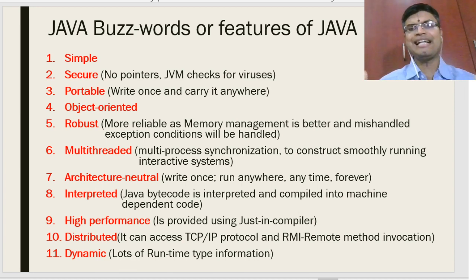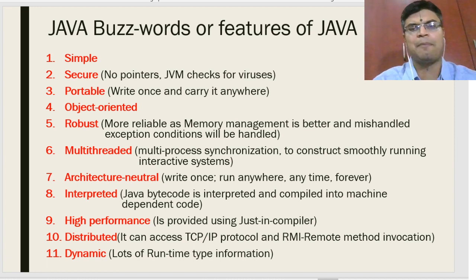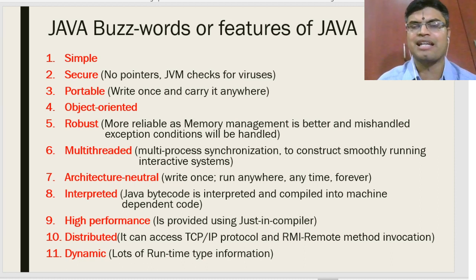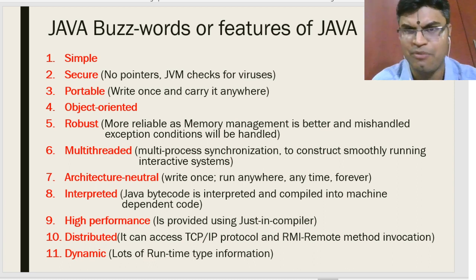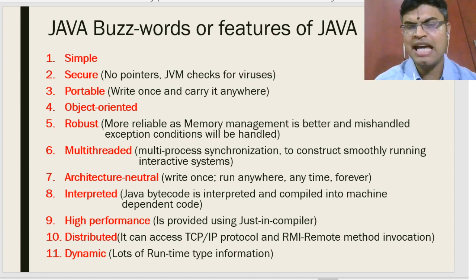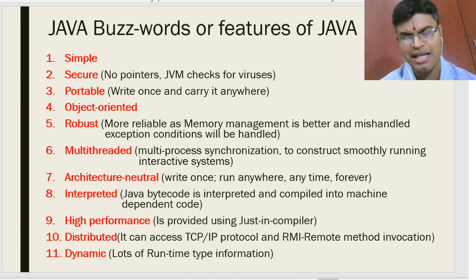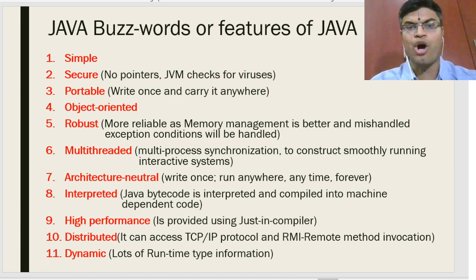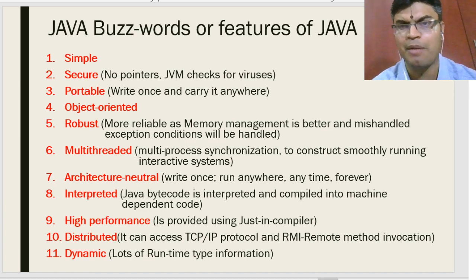You can create distributed applications in Java, including TCP/IP applications and RMI applications. RMI stands for Remote Method Invocation, and TCP/IP stands for Transmission Control Protocol/Internet Protocol. These distributed applications can be written directly using Java, which is very powerful. Finally, Java is dynamic — it records all runtime information and logs all the information.